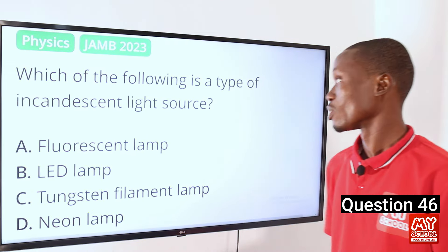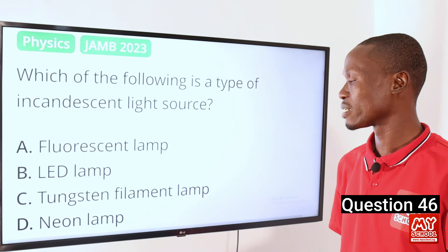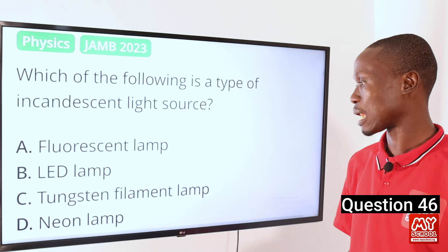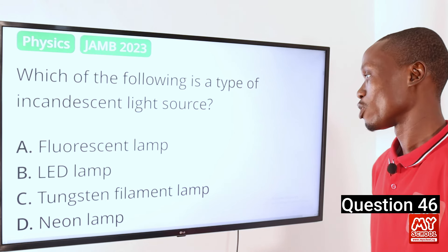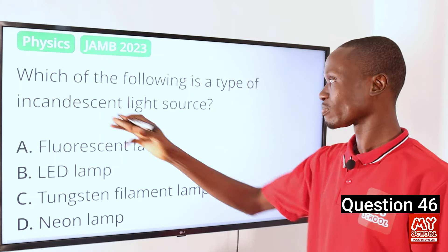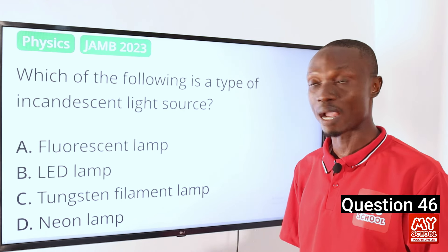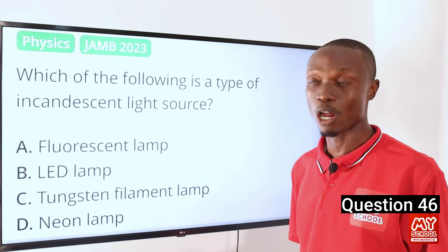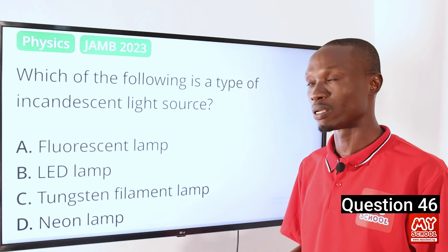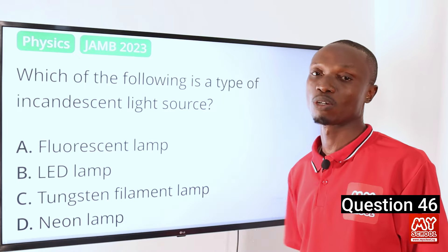Question 46. Which of the following is a type of incandescent light source? A, fluorescent light; B, LED lamp; C, tungsten filament lamp; D, neon lamp. The answer is option C, tungsten filament lamp. Incandescent light sources produce light by heating a material until it glows, and the material usually heated is a metal — an example of such metal is tungsten.